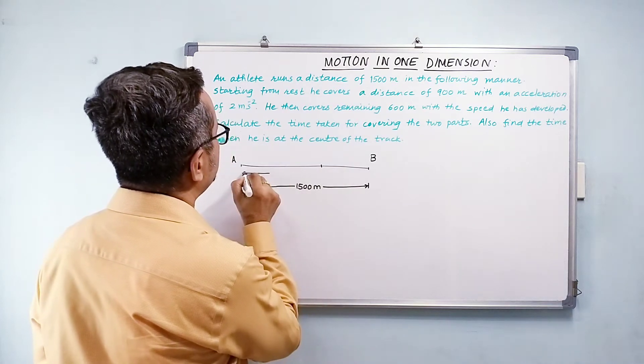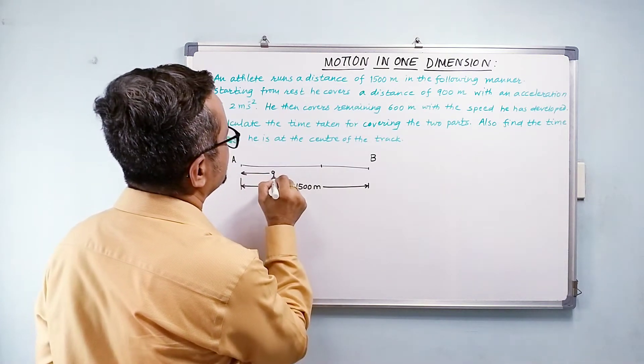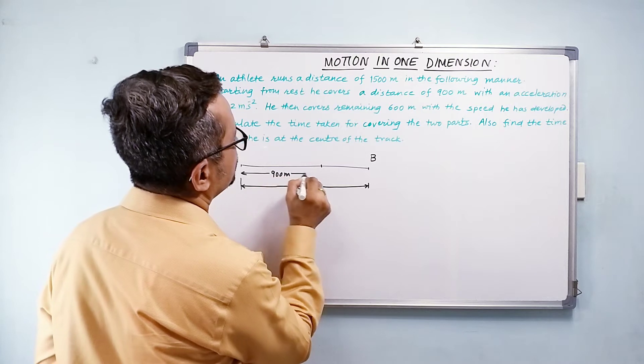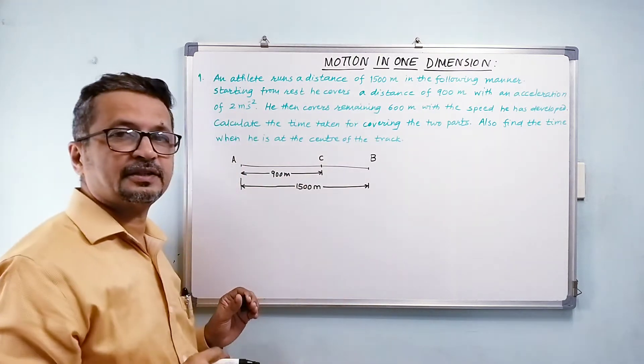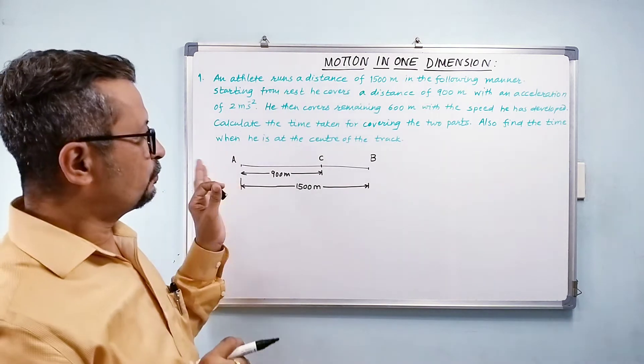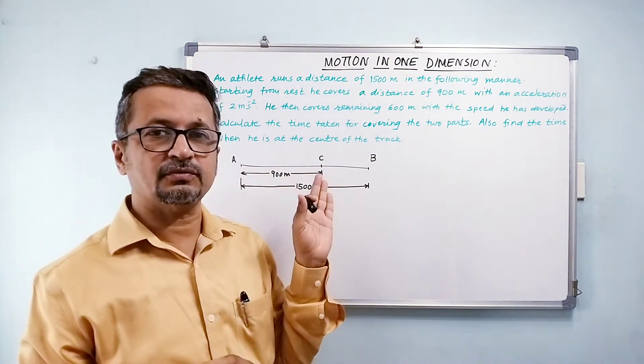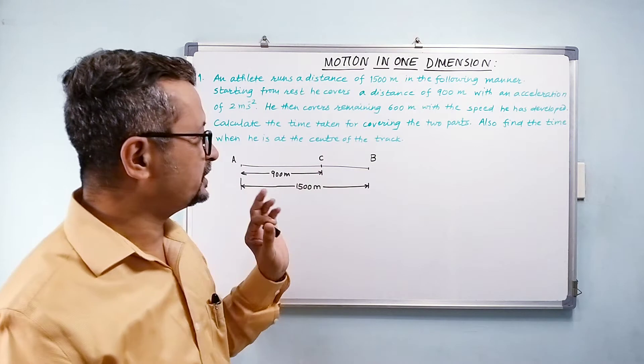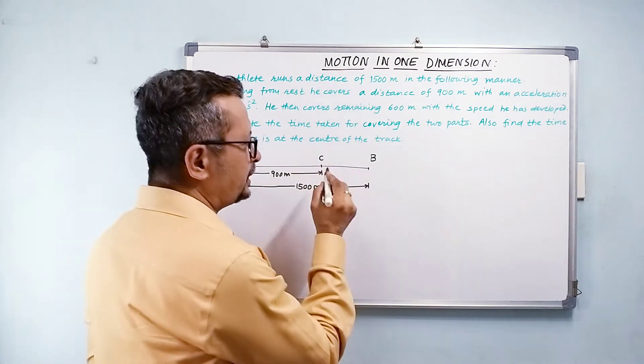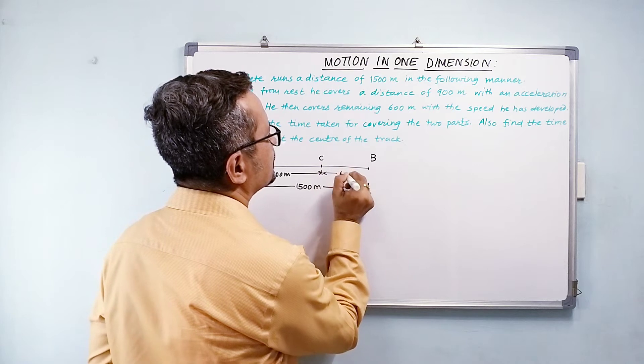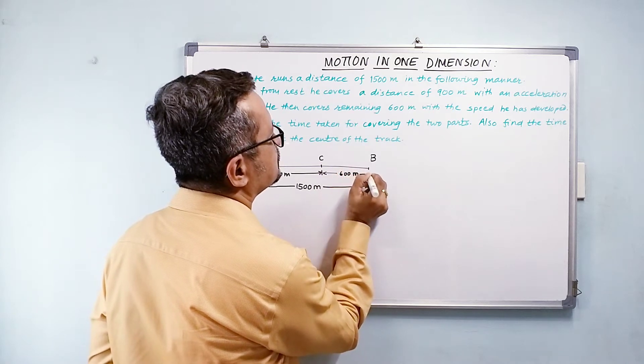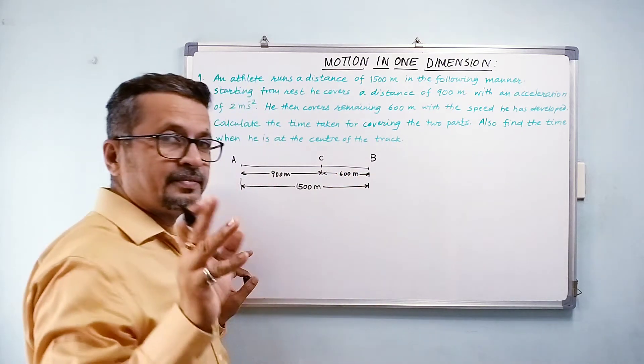This distance is covered with acceleration of 2 meters per second squared. And whatever velocity that he attains, whatever speed that he attains at point C, that speed will be continued for the remaining 600 meters. So that is what we understand.